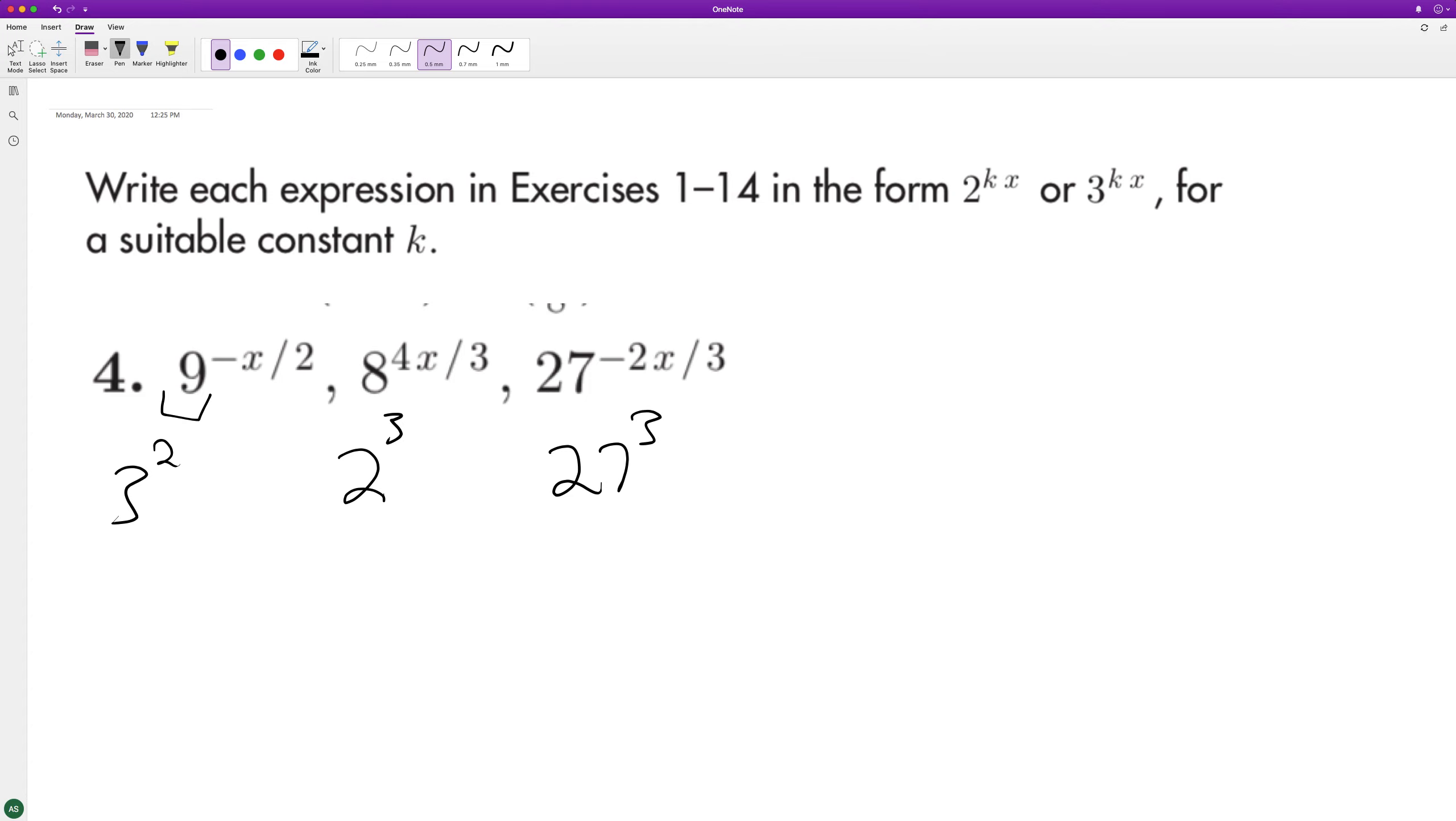When we rearrange these, we end up with 3, and then multiply the exponent 2 here across what we already had, so it cancels out the negative x over 2, cancels out the 2 on the bottom, so we end up with 3 raised to the negative x.